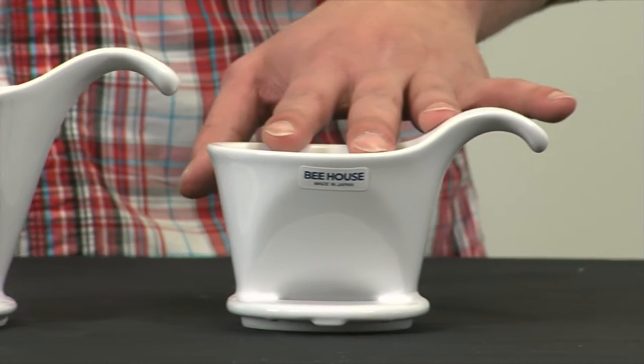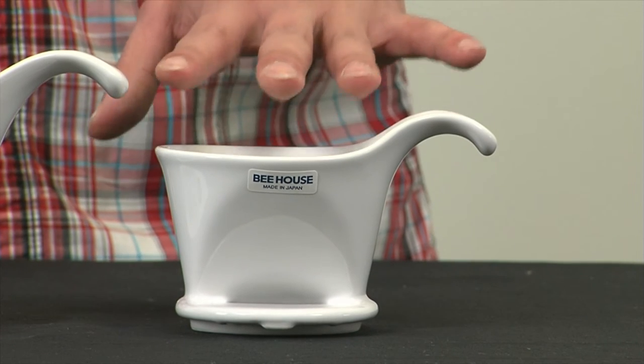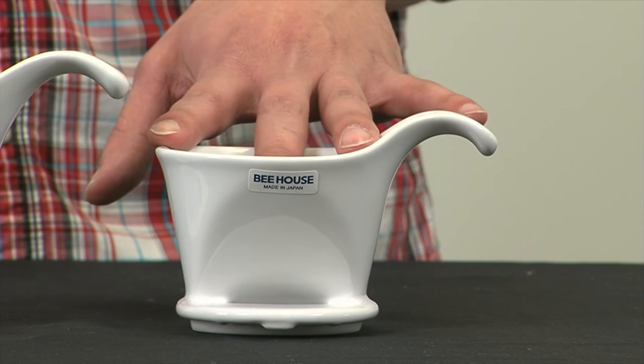For the small we recommend 18 to 24 grams with about 300 to 400 milliliters of water and similar 3 to 3 and a half minute total brewing time.